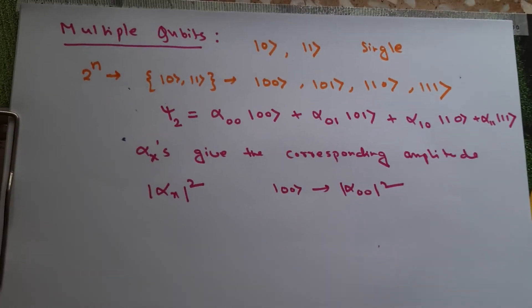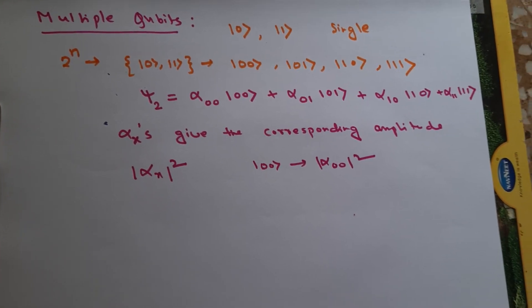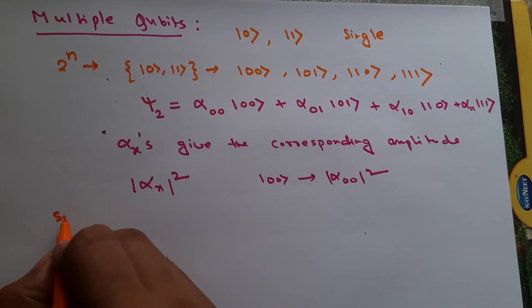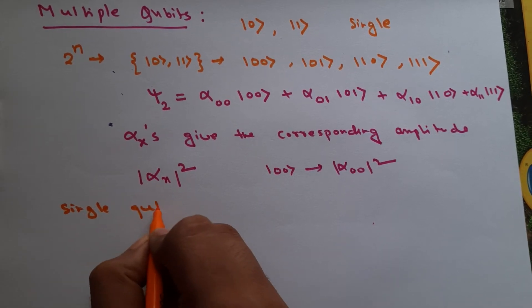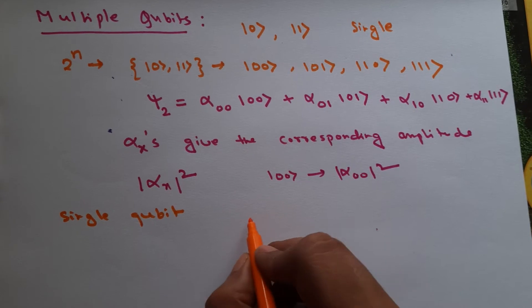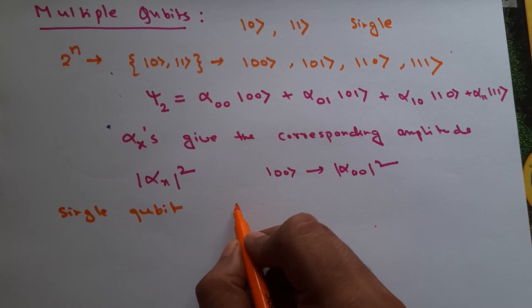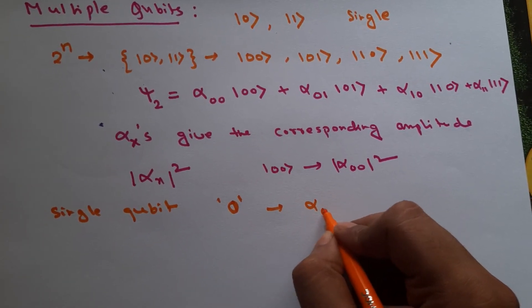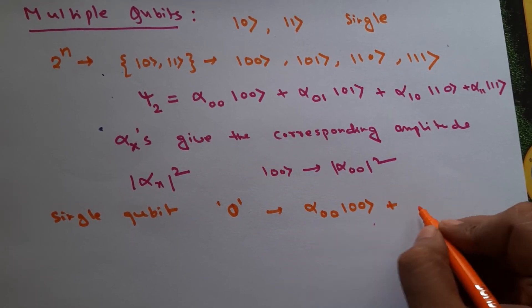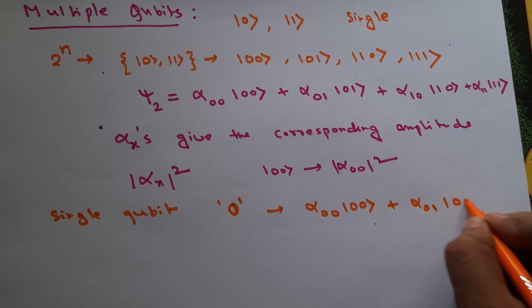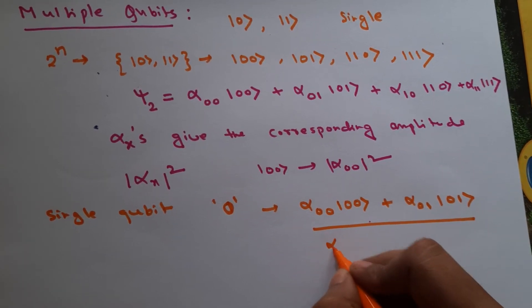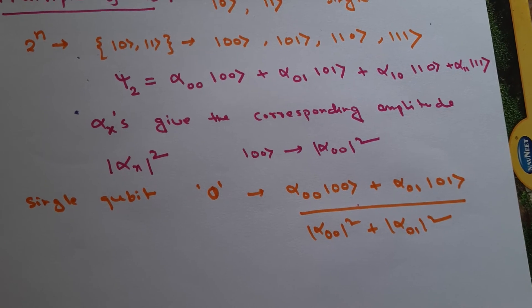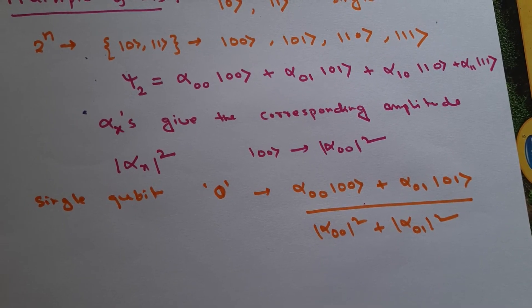We can also measure a single qubit within the two-qubit system. If we only measure the first qubit, the probability that the outcome will be 0 is given by alpha_00 |00⟩ + alpha_01 |01⟩, normalized by |alpha_00|² + |alpha_01|².